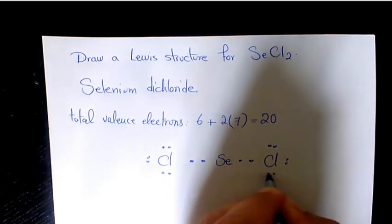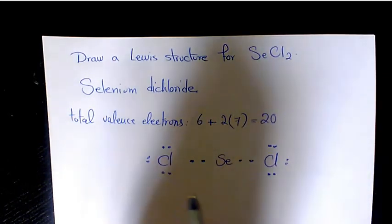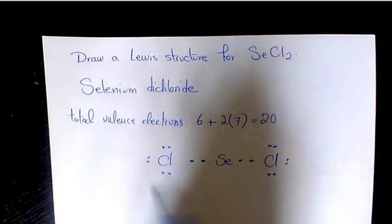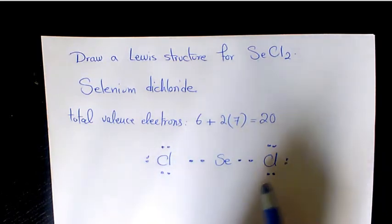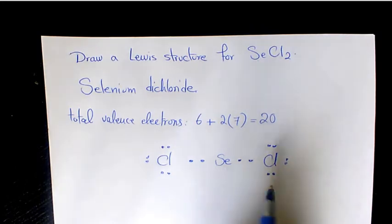Now we need to check that if chlorine follows octet rule: we have two, four, six, eight, two, four, six, eight for chlorine. So basically it means that it follows that, and then we need to count the total available electrons.